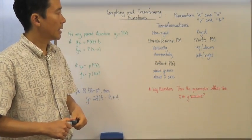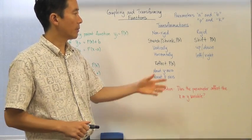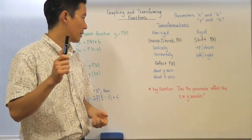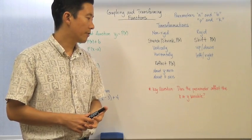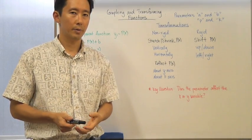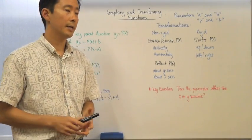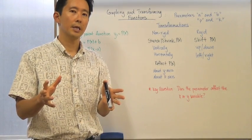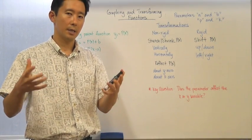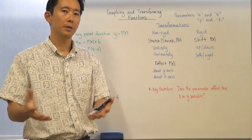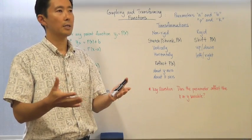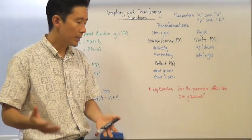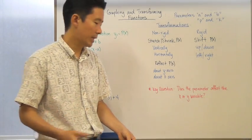We need to go ahead and answer this key question now that we have all the different transformations: does the parameter affect the x or the y variable? Because remember, when you have the parent function, in order to create the child function, you need to affect the x and y variables with parameters. That's going to be key because it will clue you in as to exactly what's happening.